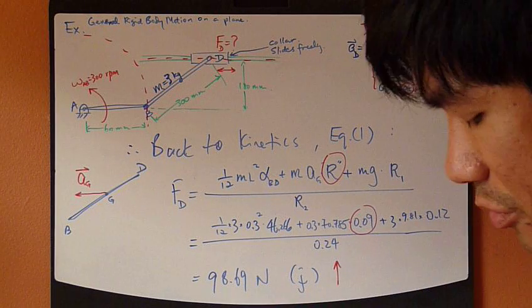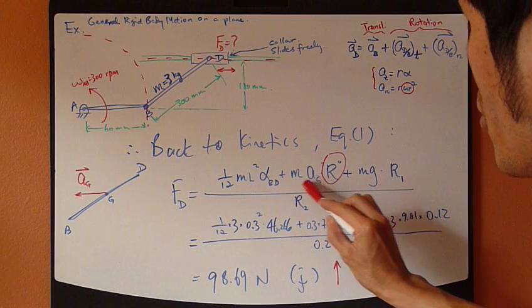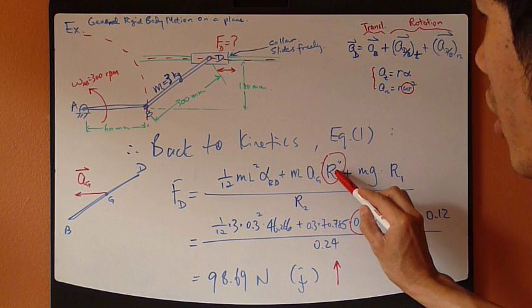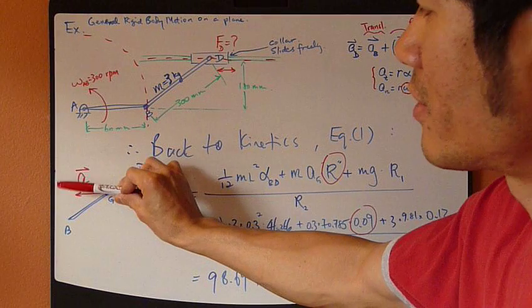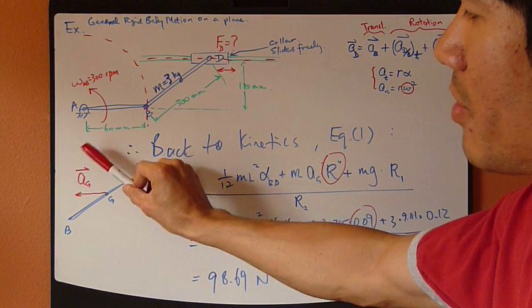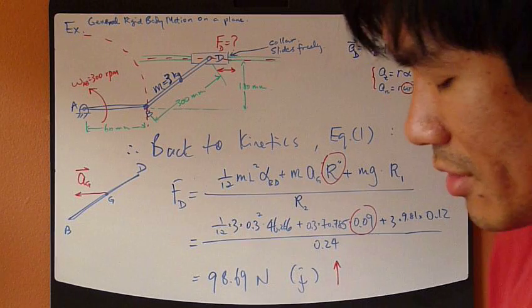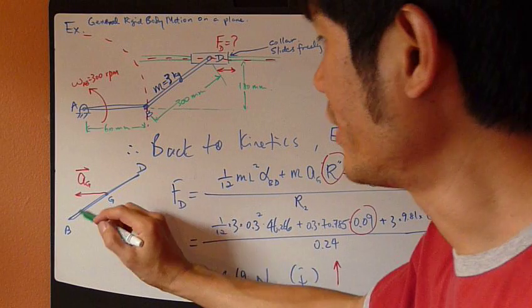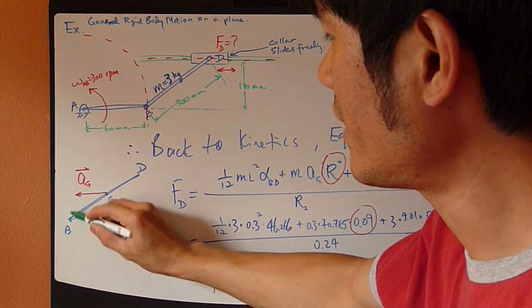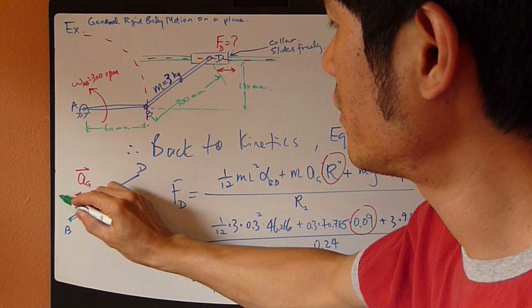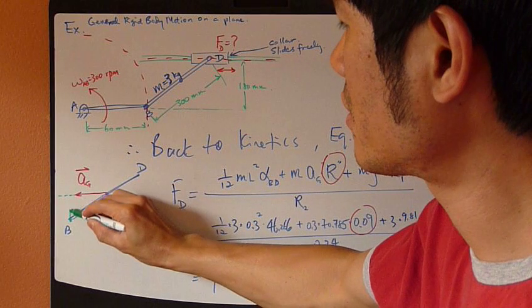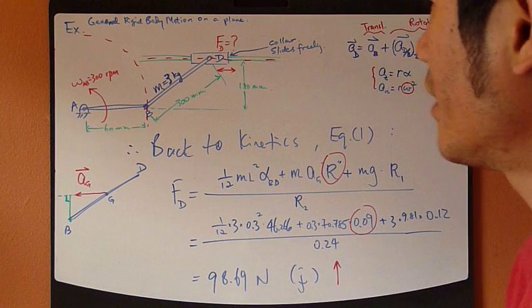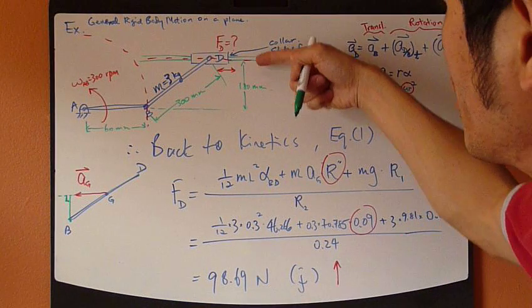Now remember that this R right here, this term, this MAG term, this R is dependent on the direction of this AG. Now this AG has just been found to be horizontal, which means that now the R, the moment R term, is the shortest distance between point B and this vector, which is this distance right there, perpendicular distance, which is half of this height right there.